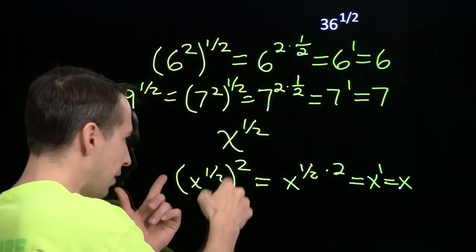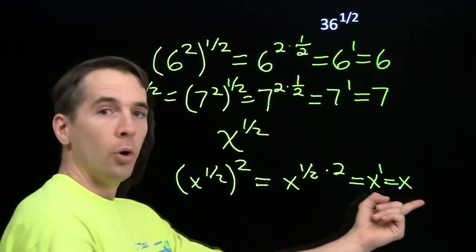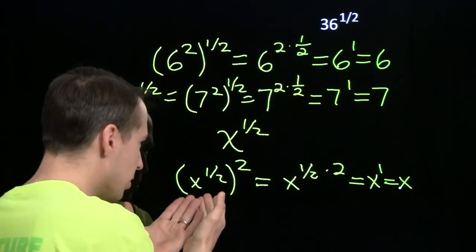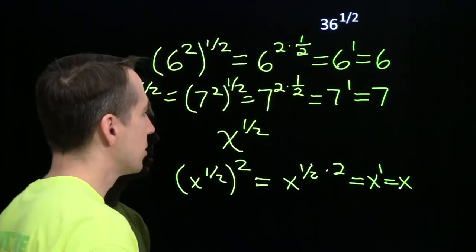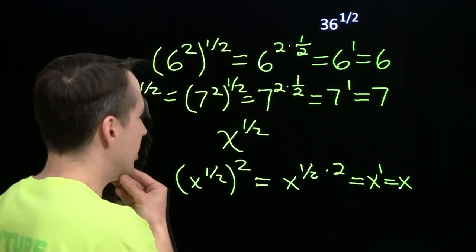So x to the 1 half, if we square it, and we're going to use our exponent rules, we get x. So x to the 1 half is the number we square to get x. Fascinating.